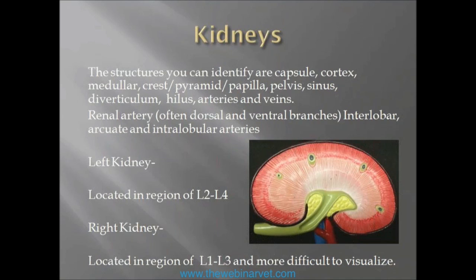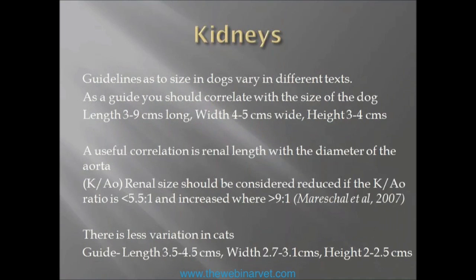Guidelines to kidney size in dogs vary between different texts. As a guide, you should correlate with the size of the dog, but there's a huge amount of variation. On average, a dog's kidney length can be anything from three to nine centimeters, its width is four to five centimeters, and its height or depth is three to four centimeters. A useful correlation is the relationship between renal length and the diameter of the aorta — renal size should be considered reduced if the ratio is less than 5.5 to one, and increased if it's greater than nine to one. Even so, there's a huge variation of normal.